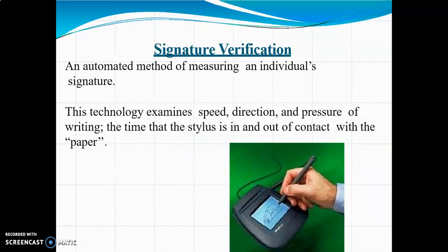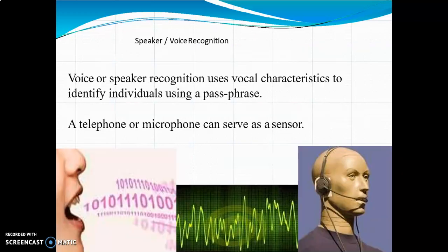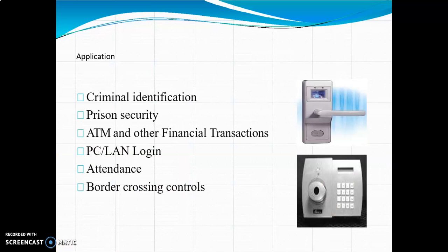Signature verification is an automatic method of measuring an individual's signature. This technology examines the speed, direction, and pressure of writing, and the time the stylus is in and out of contact with the paper. Voice recognition uses vocal characteristics to identify individuals using a passphrase, and a telephone or microphone can serve as a sensor.